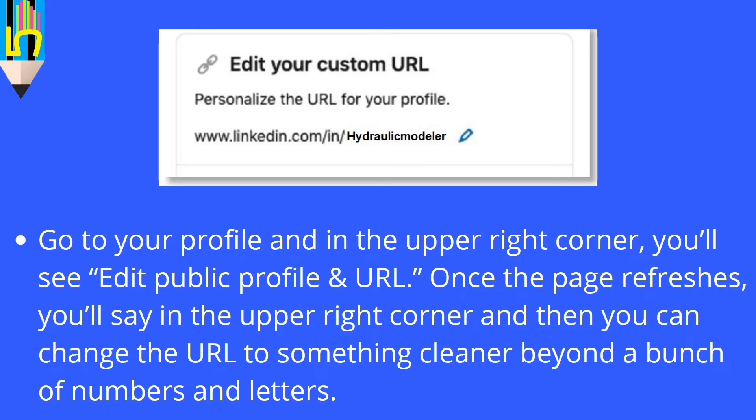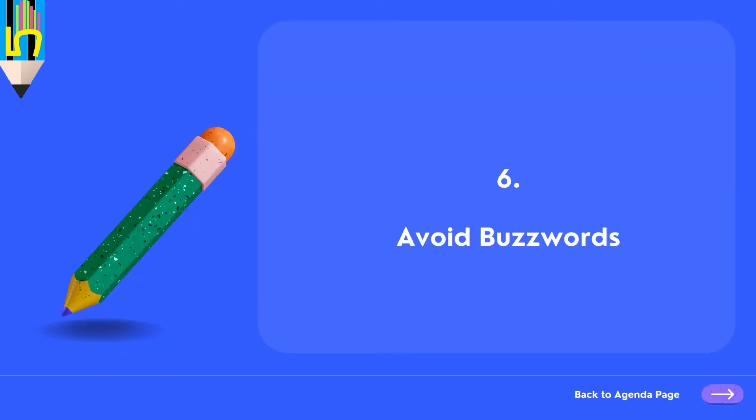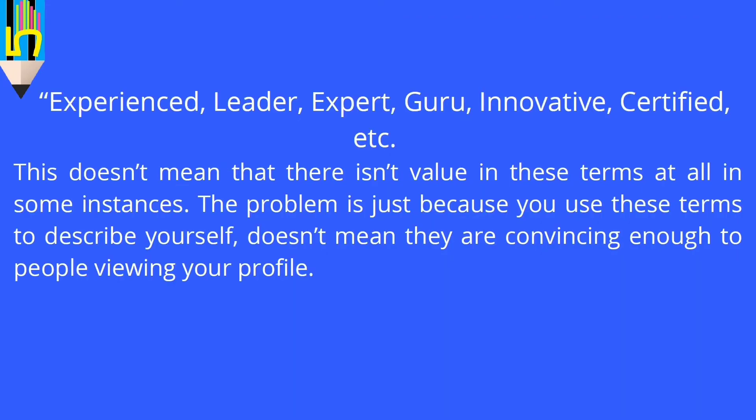Avoid buzzwords such as 'experienced,' 'leader,' 'expert,' 'guru,' 'innovative,' or 'certified.' Recruiters don't give value to these words — they want to see these characteristics demonstrated, not just written in your profile. Rather than listing these buzzwords, put the actual skill sets and degrees you have, as that will give you a higher rank.